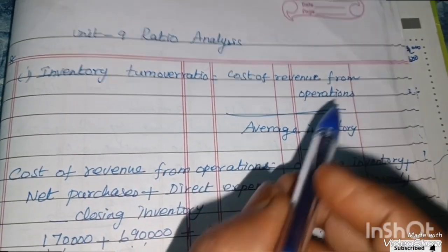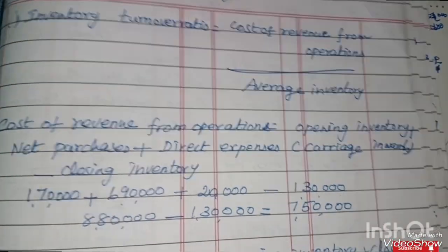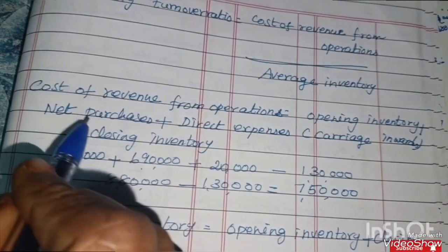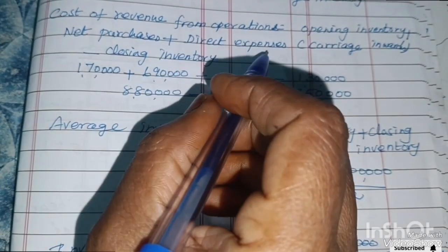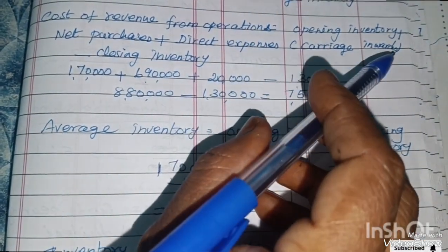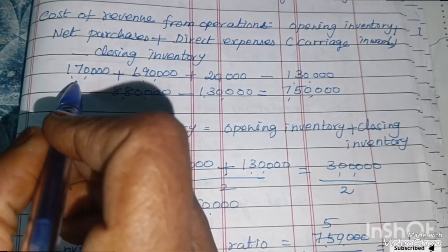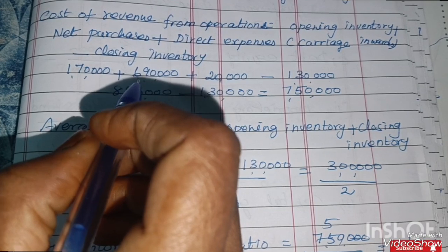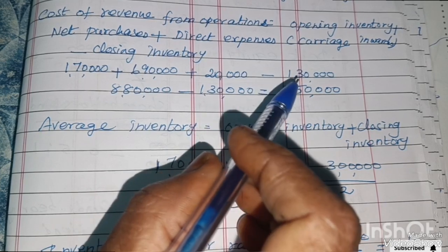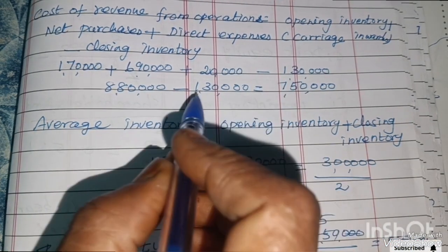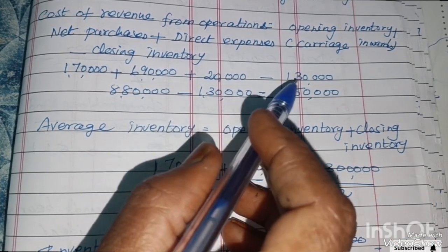Inventory Turnover Ratio formula: Cost of Revenue from Operations divided by Average Inventory. Cost of Revenue from Operations equals opening inventory plus net purchases plus direct expenses minus closing inventory. That is: 1,70,000 plus 6,90,000 plus 20,000 minus 1,30,000.